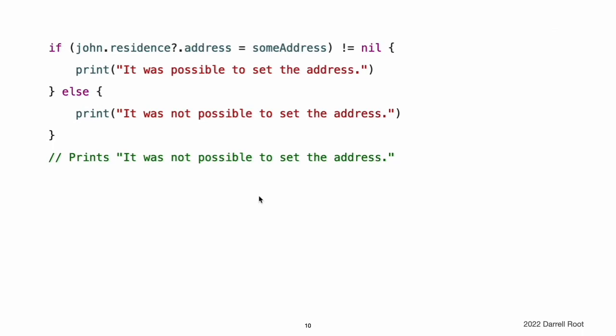The same is true if you attempt to set a property through optional chaining. This example attempts to set an address value for john.residence, even though the residence property is nil. Any attempt to set a property through optional chaining returns a value of type optional void, which enables you to compare against nil to see if the property was set successfully.